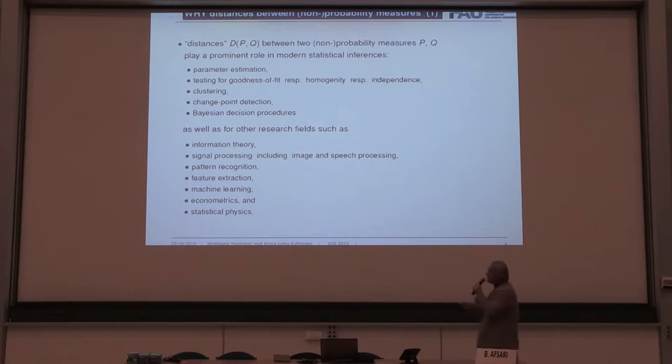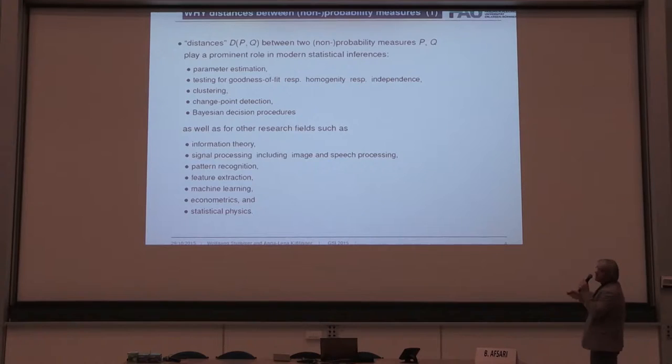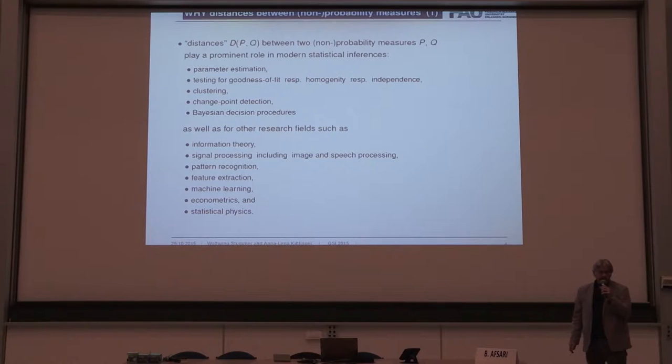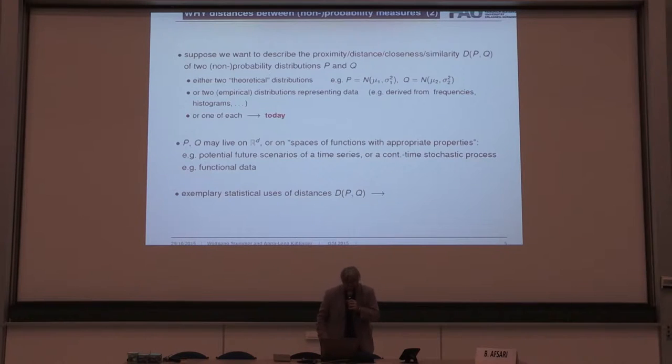Distances between two probability measures play a very prominent role in statistics. They can be used for getting estimators, for testing goodness of fit, testing independence, clustering, change point detection, patient decision procedures, and on and on. And of course not only limited to statistics but also to other fields of research like information theory, signal processing, pattern recognition, feature extraction, machine learning, etc. I think this very nice conference here contributes very much to this interdisciplinary point of view.